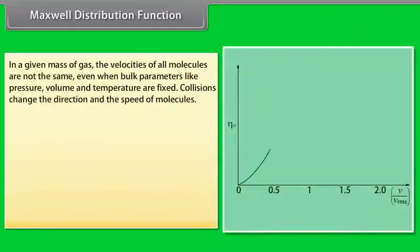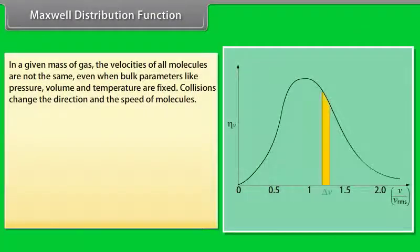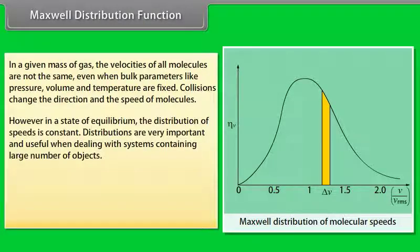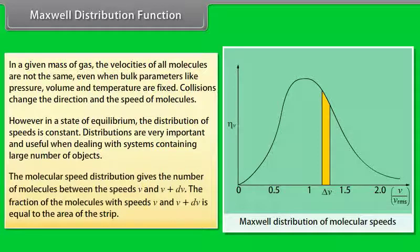Maxwell distribution function: In a given mass of gas, the velocities of all molecules are not the same, even when bulk parameters like pressure, volume and temperature are fixed. Collisions change the direction and the speed of molecules. However, in a state of equilibrium, the distribution of speed is constant. Distributions are very important and useful when dealing with systems containing large numbers of objects. The molecular speed distribution gives the number of molecules between the speeds V and V plus DV. The fraction of the molecules with speeds V and V plus DV is equal to the area of the strip.